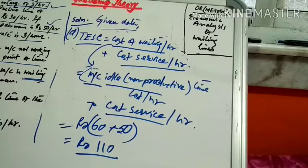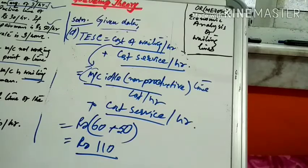We have solved the numerical on the economic analysis of waiting lines, finding the cost of nonproductive time of the machine operator and the expected cost of the system per hour — the two newest concepts in this queuing theory topic. Thank you for your presence.